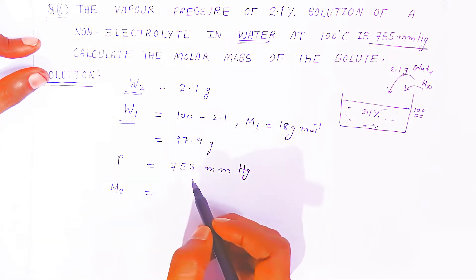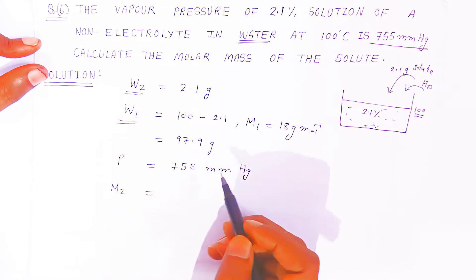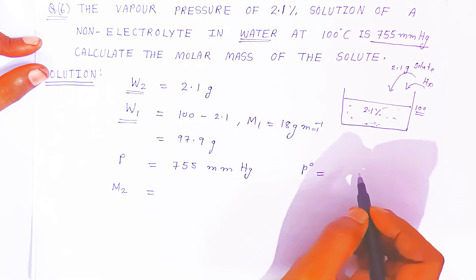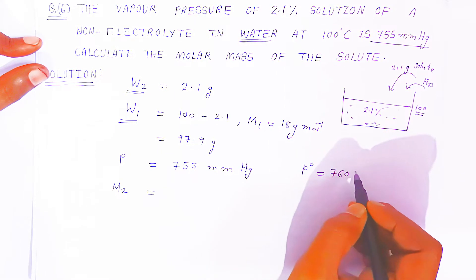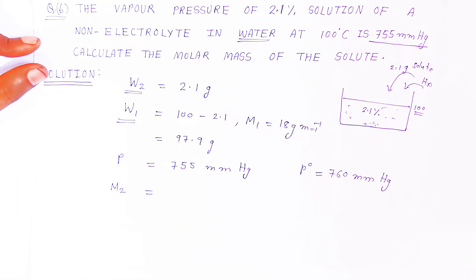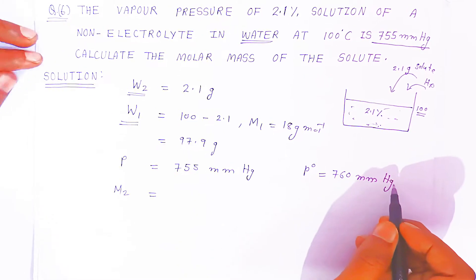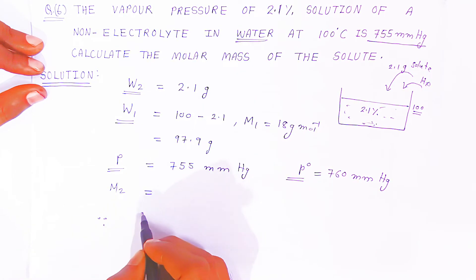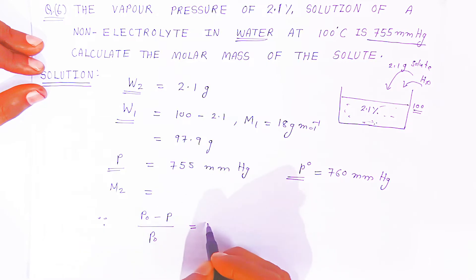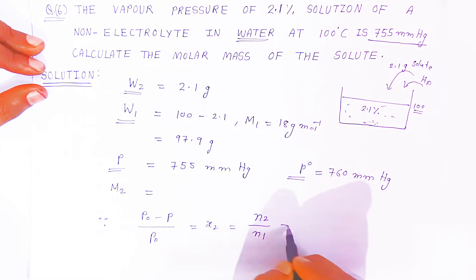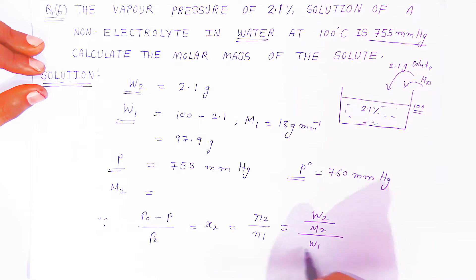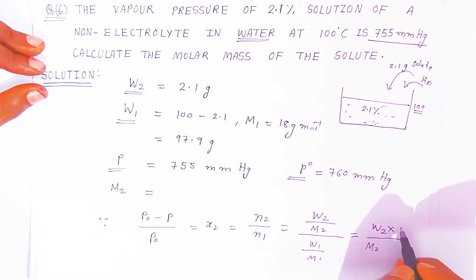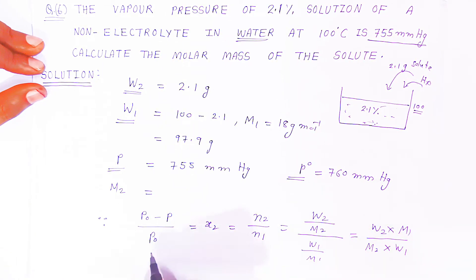Now you know everything needed. Since the vapor pressure of solution is given, we apply the relative lowering of vapor pressure formula: (P0 − P) / P0 = X2 = N2 / N1 = (W2 / M2) / (W1 / M1), which simplifies to (W2 × M1) / (W1 × M2). This is the formula for relative lowering of vapor pressure.